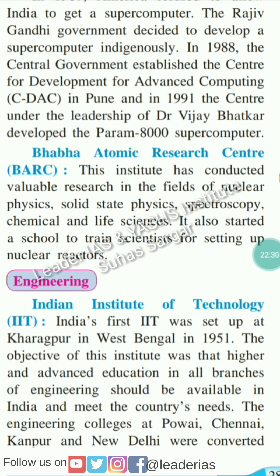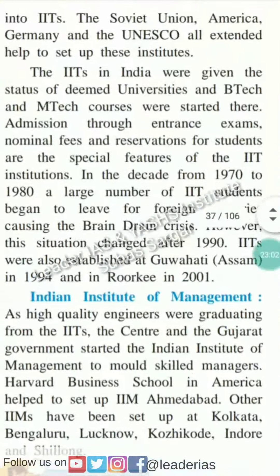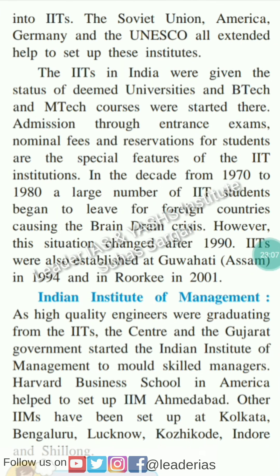Engineering - Indian Institute of Technology: India's first IIT was set up at Kharagpur in West Bengal in 1951. The objective of these institutes was that higher and advanced education in all branches of engineering should be available in India and meet the country's needs. The engineering colleges at Powai, Chennai, Kanpur, and New Delhi were converted into IITs. The Soviet Union, America, Germany, and UNESCO also extended help to set up these institutes. The IITs in India were given the status of deemed universities, and B.Tech and M.Tech courses were started there. Admission through entrance exam, nominal fees, and reservation for students are the special features of the IIT institutions.